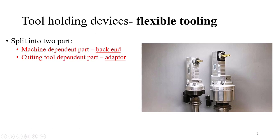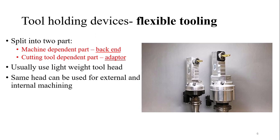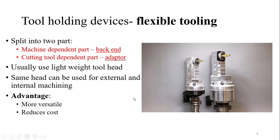The flexible tooling is used for light tool heads — if your tool is very heavy, you cannot install it into the flexible tooling. One advantage is that the same head can be used for both external and internal machining. It is more versatile, meaning many types of tools can be used. It also reduces cost, making it a very economical option.